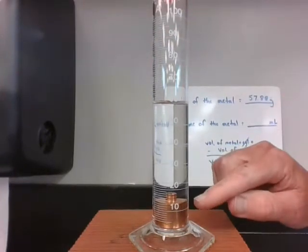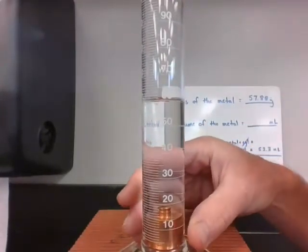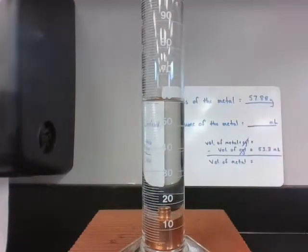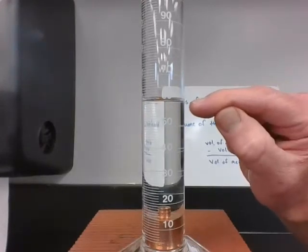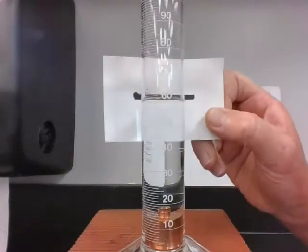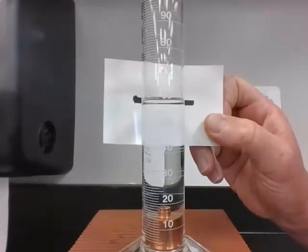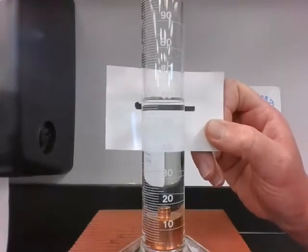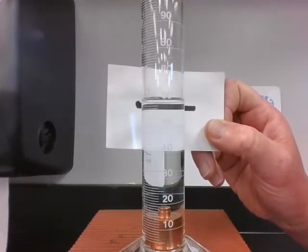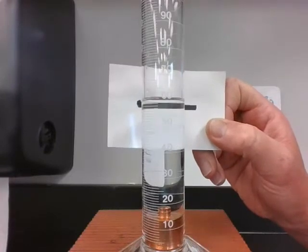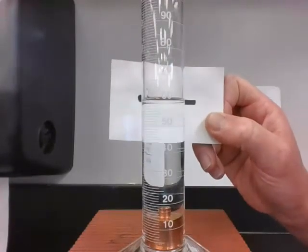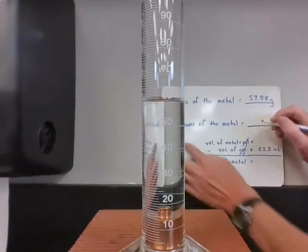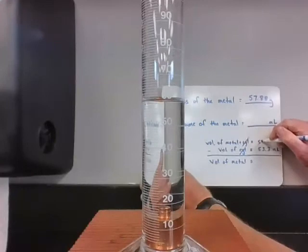Now the metal is sitting in the bottom of the cylinder. At a quick glance, it looks like the meniscus is at 60, and many students would just write down 60. But when I get eye level, I can see the bottom of the meniscus is ever so slightly below 60. If it was exactly on 60, I'd write 60.0. But I can just barely see it's below 60, so it's 59.9 milliliters—the volume of the metal and cylinder.